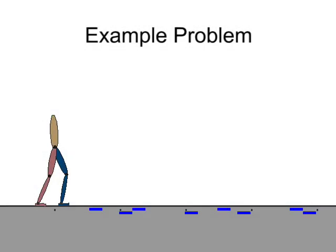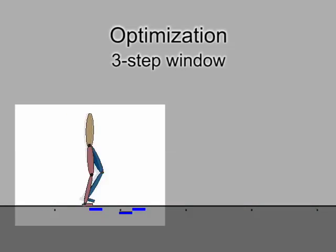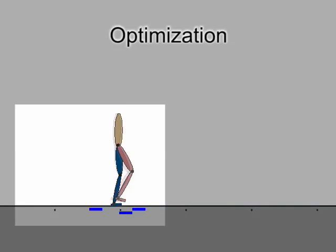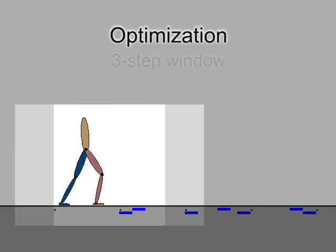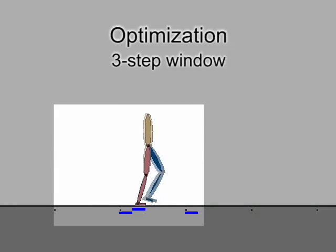The example problems consist of sets of desired foot placement locations. We use a sliding window optimization approach to solve these problems. Once a solution is found for the current window, we move it forward one step and repeat the optimization process.